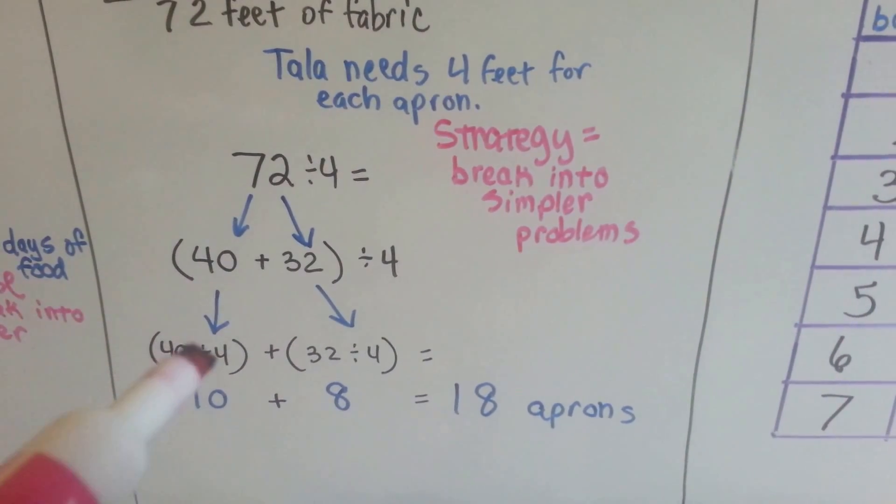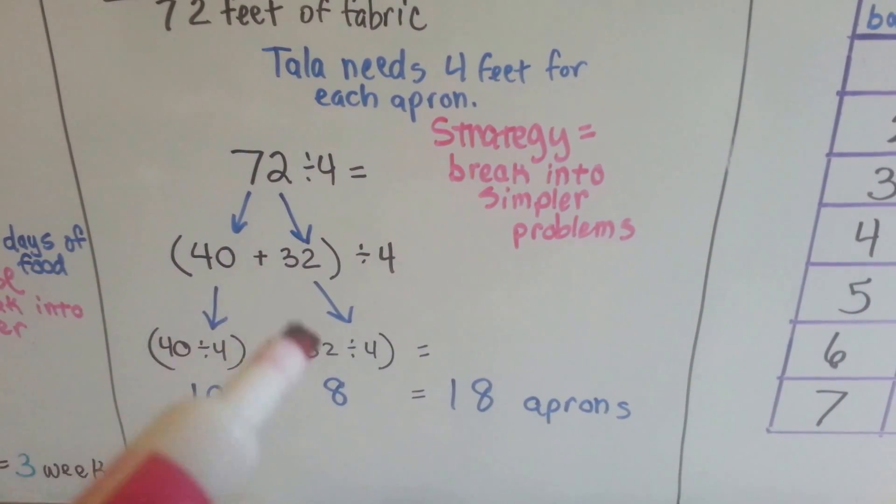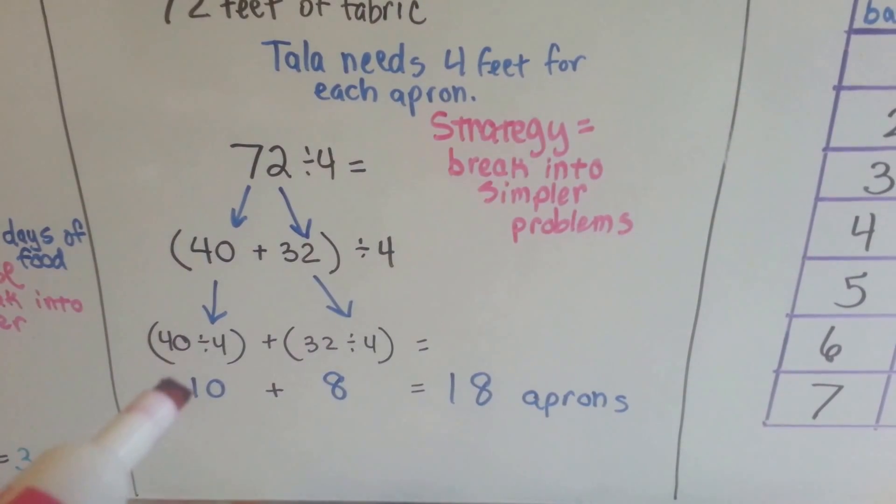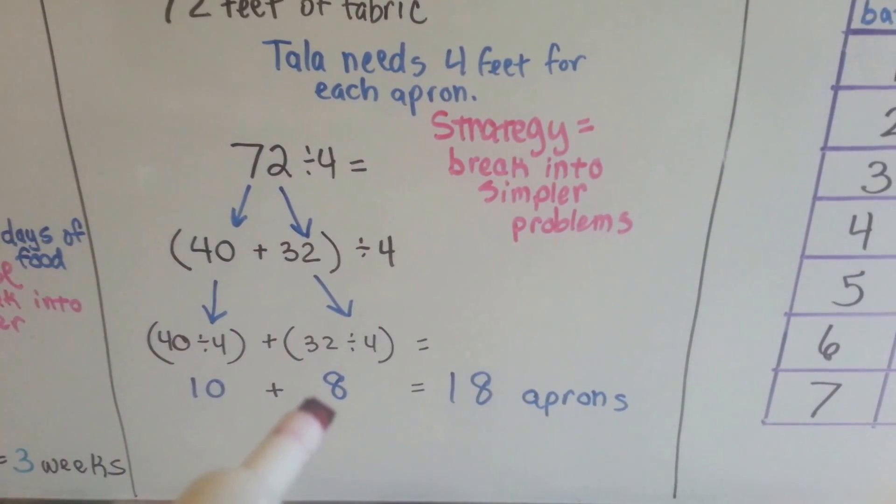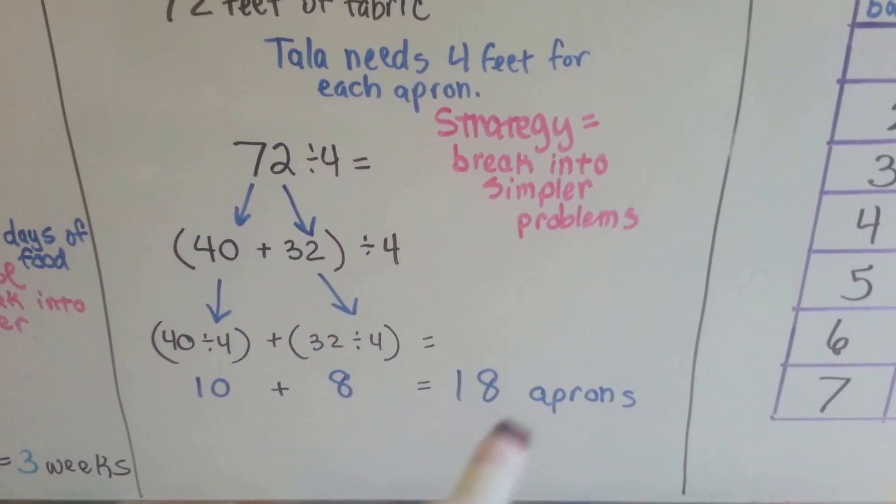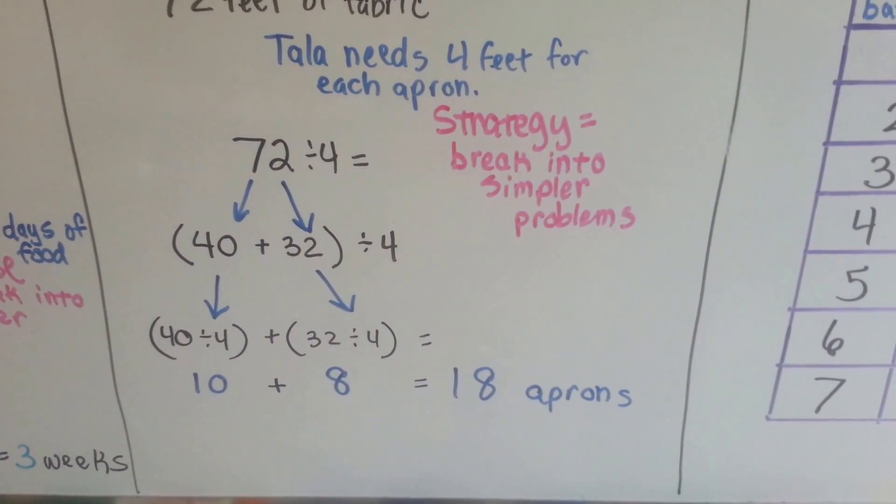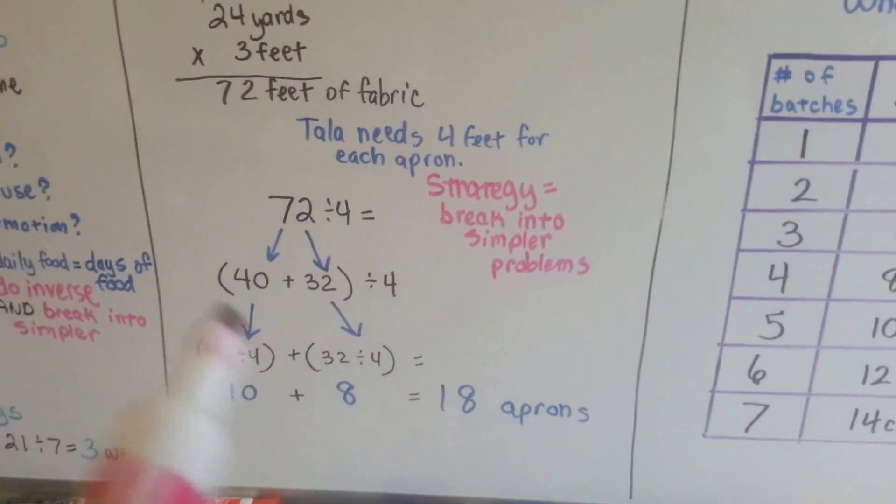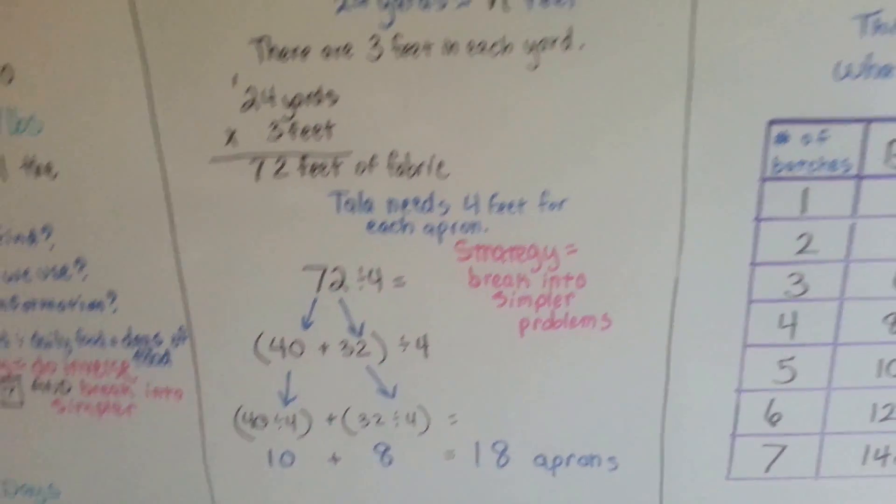So 40 divided by 4 is 10, and 32 divided by 4 is 8. We add the addends together, 10 plus 8, and we get 18 aprons she can make. See? Break it into simpler problems.